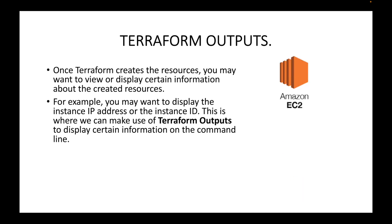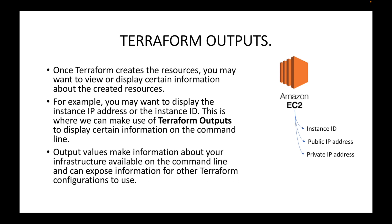For example, if you are launching an EC2 instance, you may want to see the instance ID, the public IP address, the private IP address, or any other information like which availability zone the instance is running in, which region the instance was launched in, or what AMI it is using. Any information related to that EC2 instance that you want to display on the command line — we can make use of Terraform outputs for that.